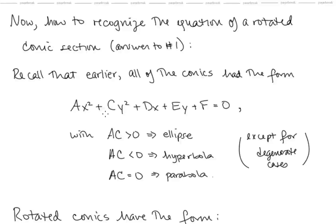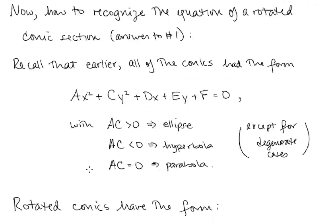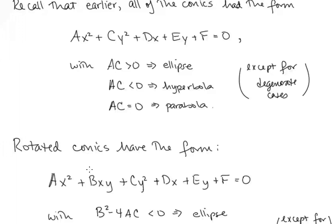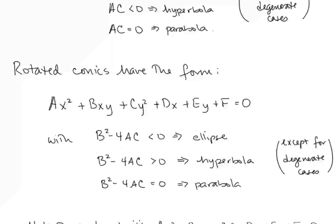You might have noticed there is no b term, and we purposely left that out because rotated conics in x-y form have a bxy term. So equations of this form are going to be rotated conic sections. Instead of just looking at the product ac, we need to look at b² − 4ac: if that's negative, we have an ellipse; positive, a hyperbola; and equal to zero, a parabola. We're not including the degenerate cases from Lesson 27.